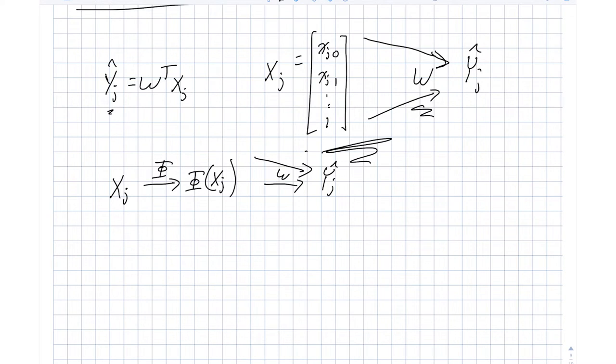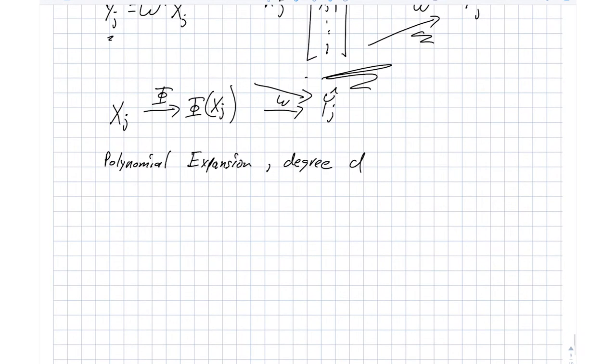So let me give you an example of what this phi might look like. A simple example is a polynomial expansion of some degree d. So let's imagine that xj, let's do this simple case, n is equal to 1. So xj is equal to xj0 and a 1. And let's assume also that d is equal to 2. What this means is that when we do this nonlinear transformation, we're going to create all possible quadratic, linear, and constant terms given the elements in this vector here.